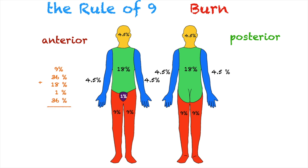I know this may be a little challenging to remember with all these numbers. All I can say is just practice — get a piece of paper, draw an anterior and posterior figure, and jot down all these numbers. Once you have memorized the Rule of Nines, come back and we will discuss the Parkland formula.